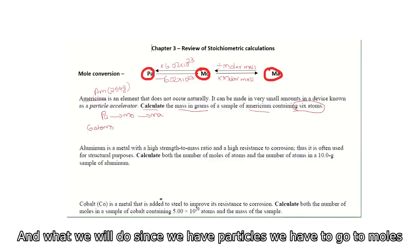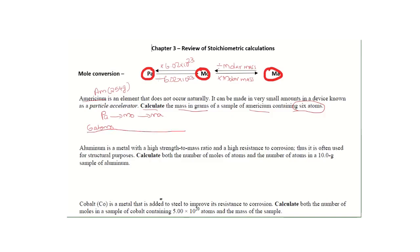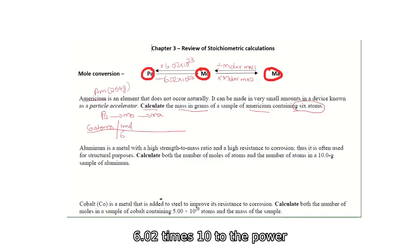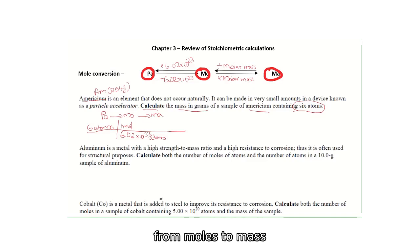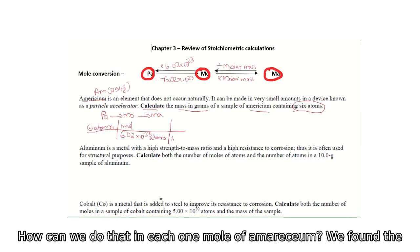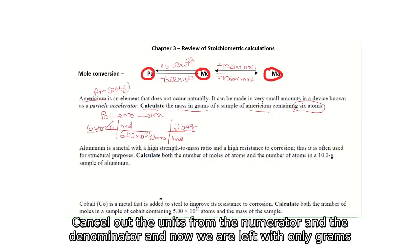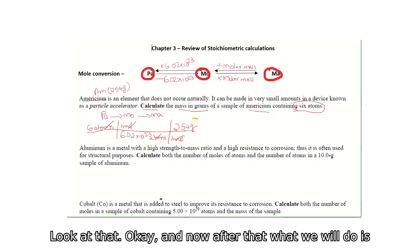We have six atoms, and since we have particles we go to moles by dividing by Avogadro's number — in each one mole we have 6.02×10²³ atoms. Then from moles to mass: in each one mole of americium the atomic mass from the periodic table is 254 grams. We cancel units from the numerator and denominator and are left with only grams.